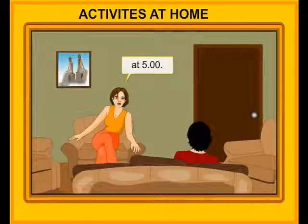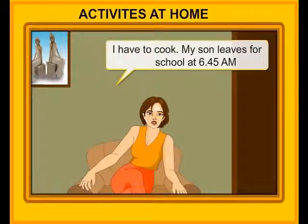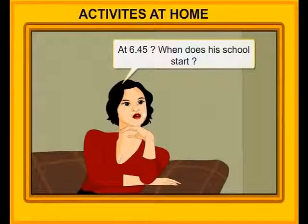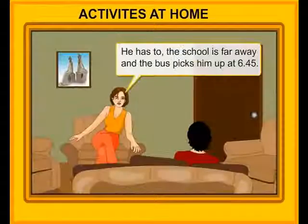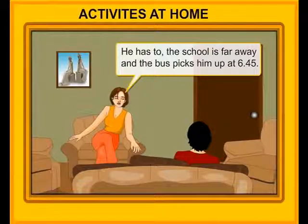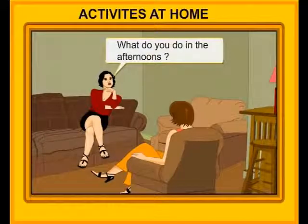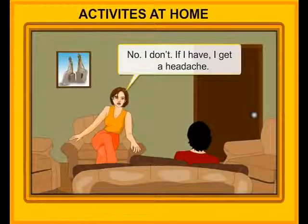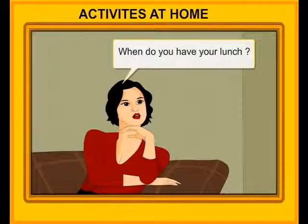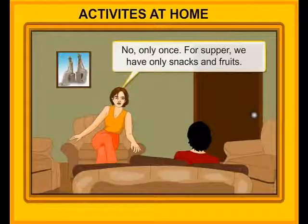Normally, when do you get up? At five. Why do you get up so early? I have to cook. My son leaves for school at 6:45 a.m. At 6:45? When does his school start? At nine. Then why does he leave so early? He has to — the school is far away and the bus picks him up at 6:45. When does he return? By five. What do you do in the afternoons? I read books or watch TV. Don't you have a nap? No, I don't. If I do, I get a headache. When do you have your lunch? Usually, I have it about one o'clock. Do you cook twice a day? No, only once. For supper, we have only snacks and fruits.